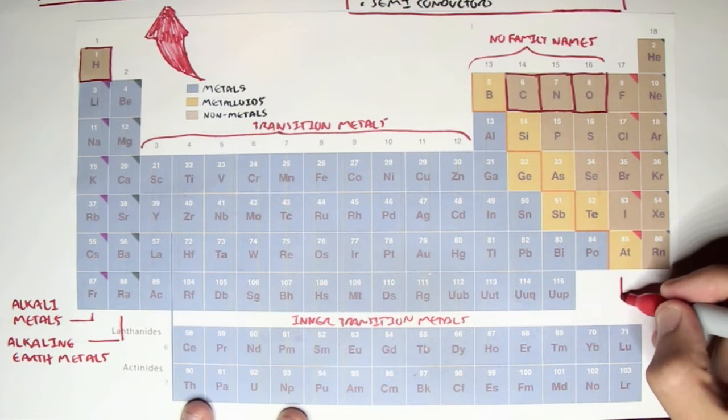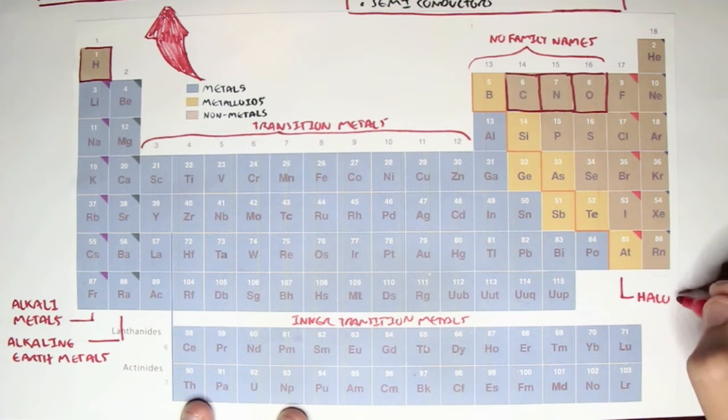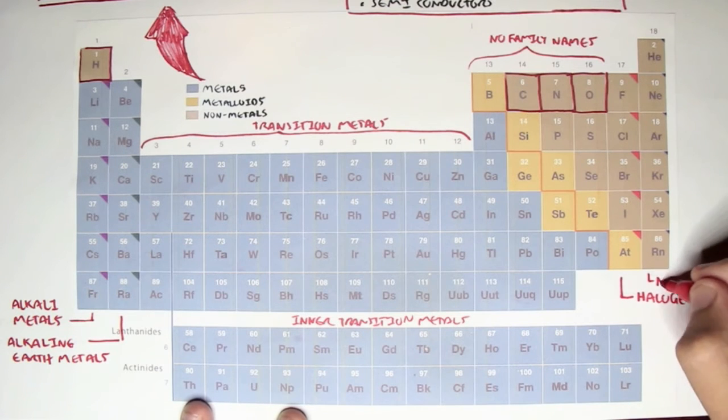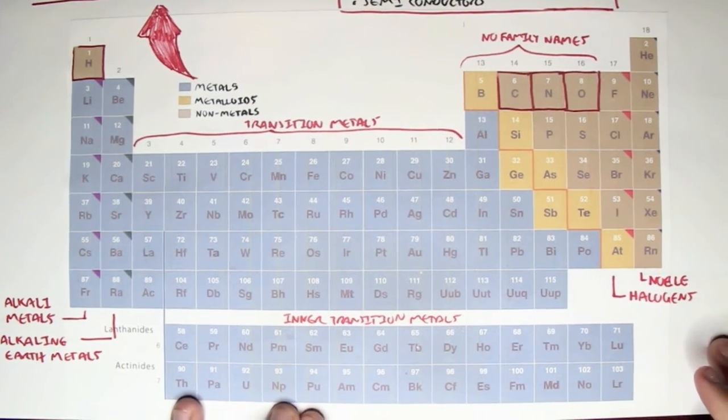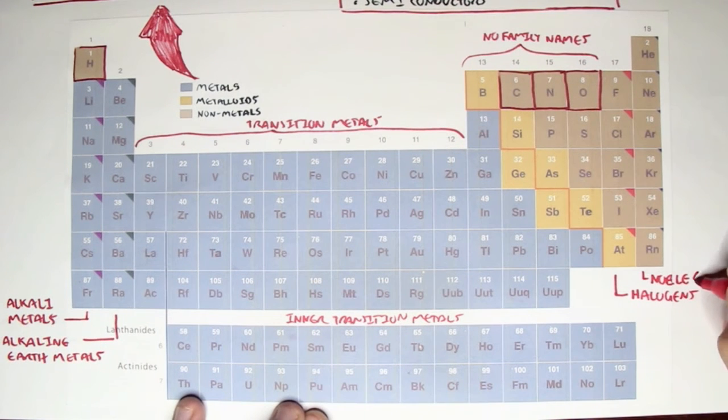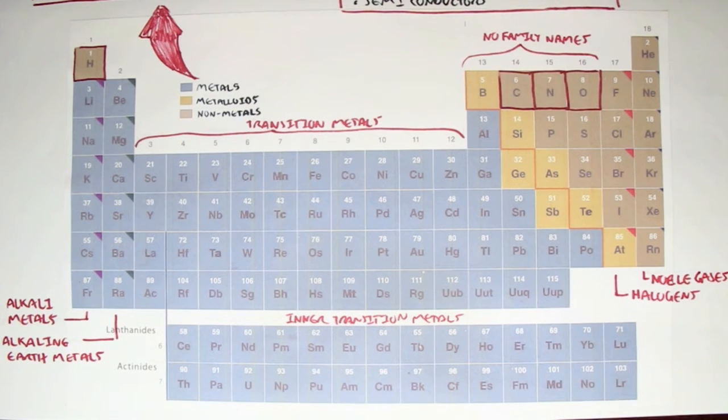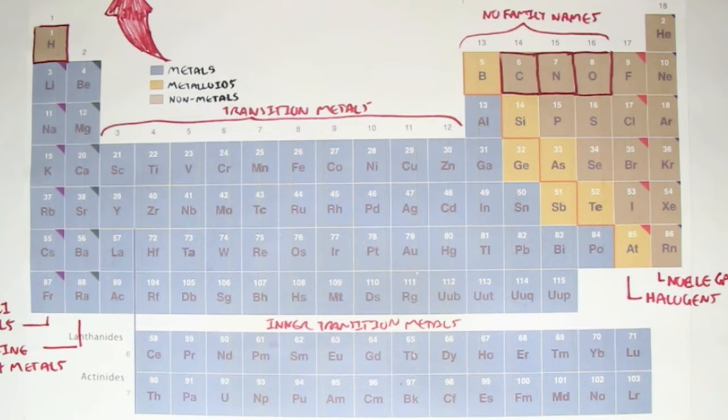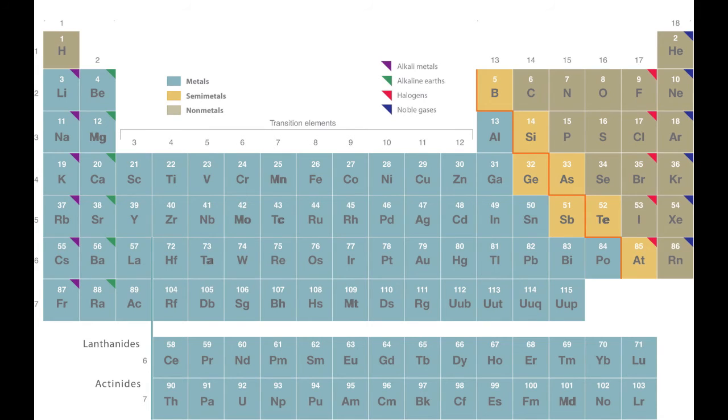Then we have 7A, which are called halogens. Finally, we have 8A, which are known as noble gases or inert gases because they're all gases. They're actually the most stable elements, the 8A. Why are they the most stable elements? Well, it all has to do with electrons. We'll soon learn more about electrons when we learn about valence electrons and electron configuration.